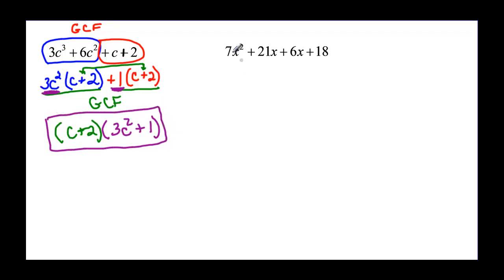One more try. We have 7x² + 21x, that's my first two terms, and then I've got 6x + 18, that's my second two terms.